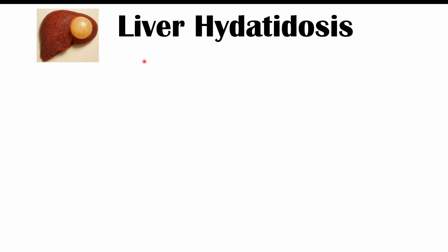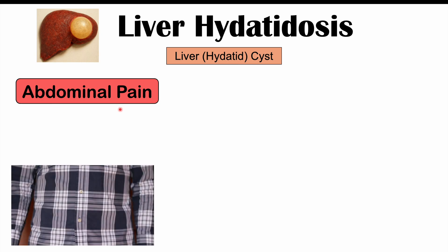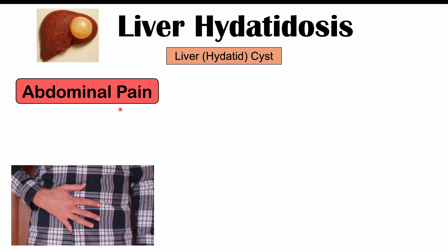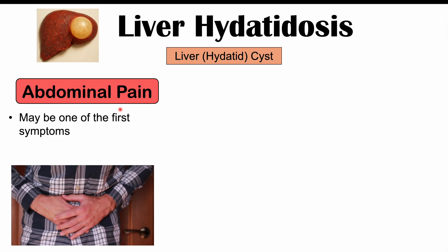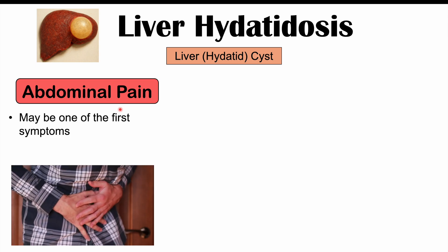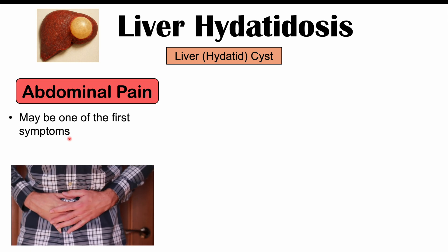We'll first talk about the signs and symptoms of having an echinococcus cyst in the liver — liver hydatidosis. Some of the first signs and symptoms include abdominal pain. If you've got a cyst in your liver and it starts to grow, it can start to cause pain depending on the location, and this may actually be one of the first symptoms of a cyst in the liver.